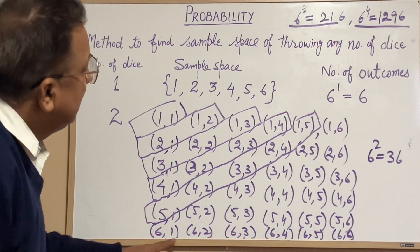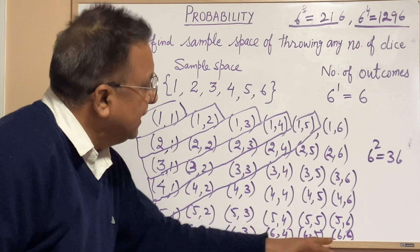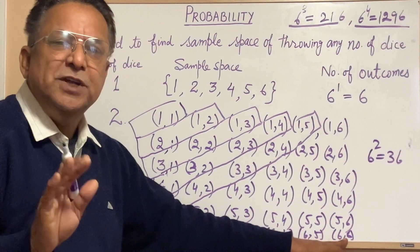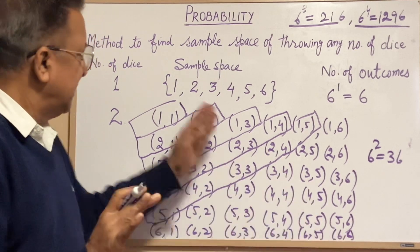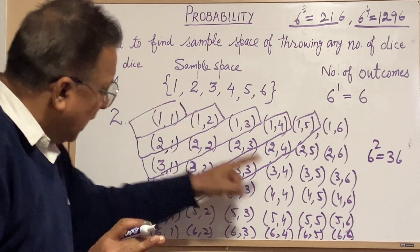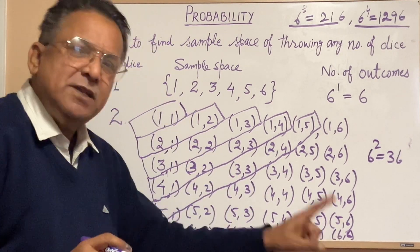Then we proceed in this way. We can take up to this, sum will be twelve. Starting from two up to twelve. In case of twelve, there is only one chance.